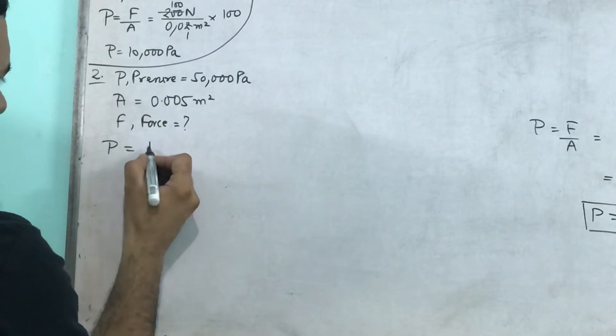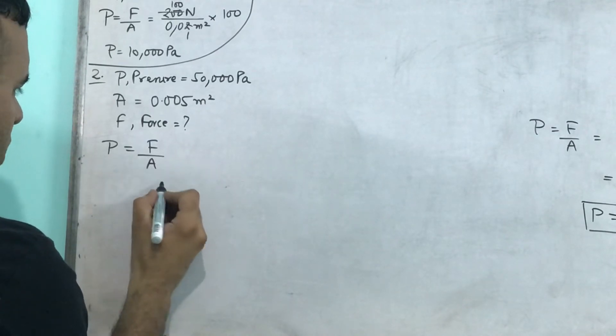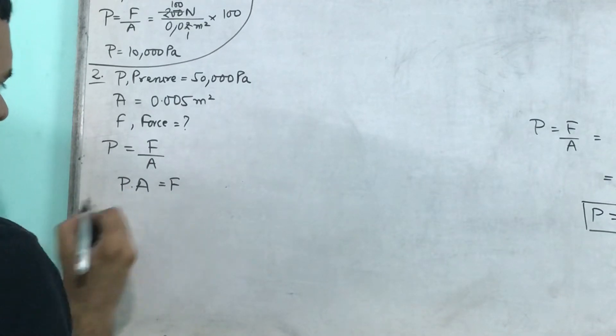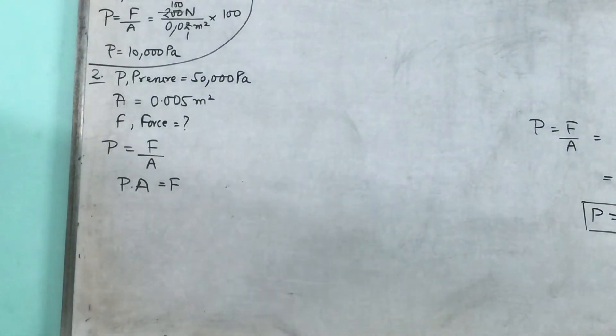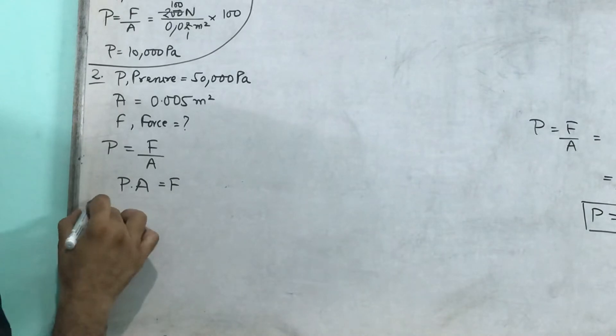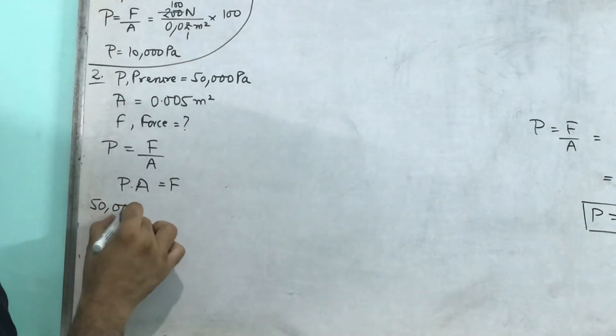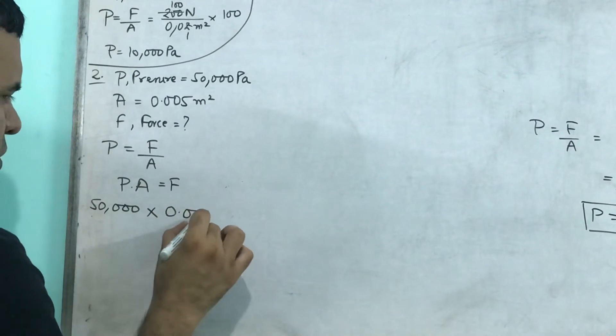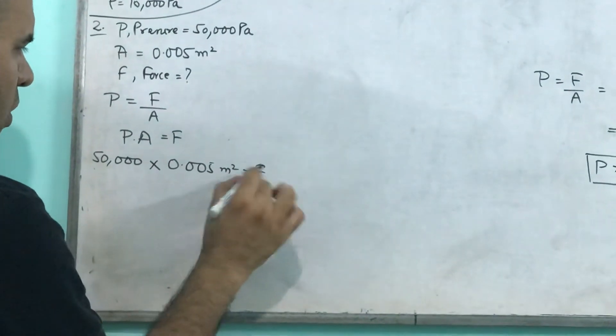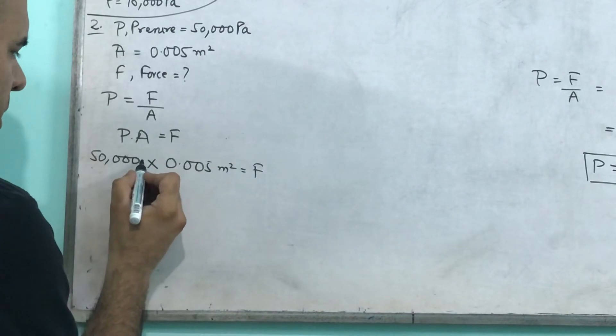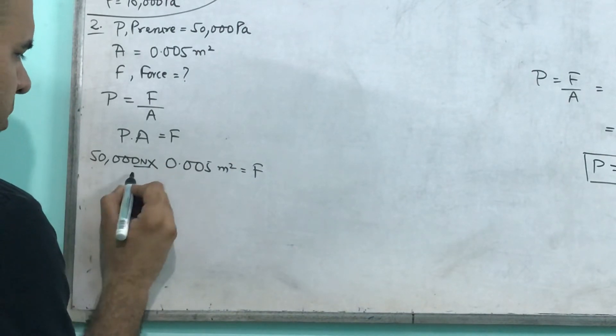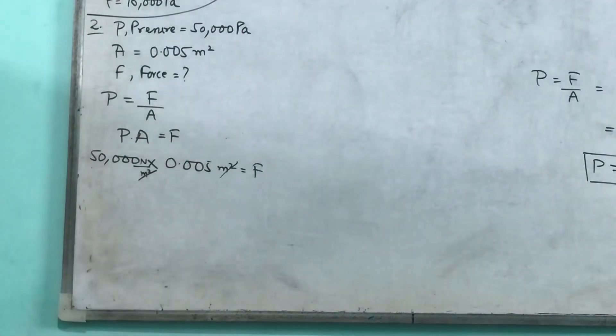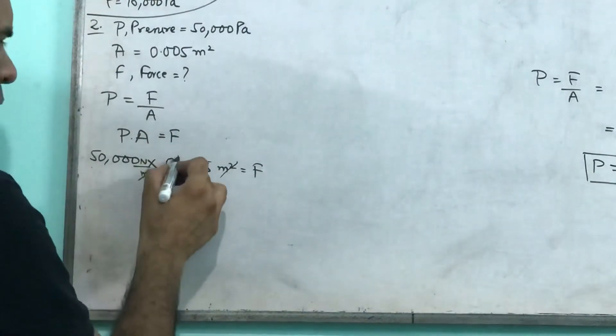You all know the formula: pressure is force upon area. So force will be pressure into A. You have to pay attention to the formula. In place of pressure you will write 50,000 and in place of area you will write 0.005 meters square. And you should know that you can write this in pascal, which is newton per meter square. Units also cancel, you should know this.